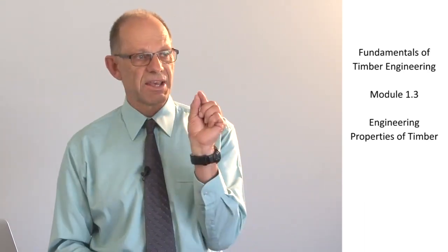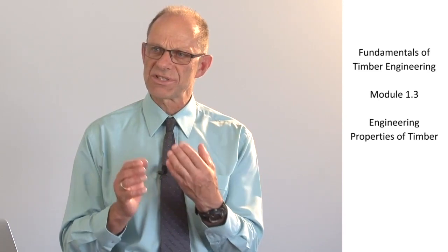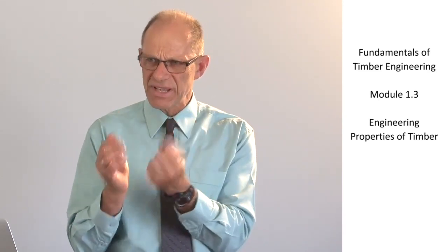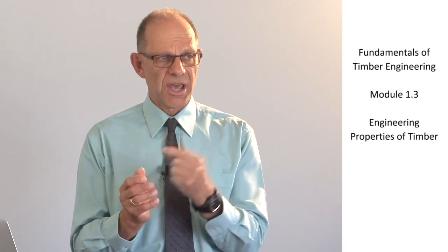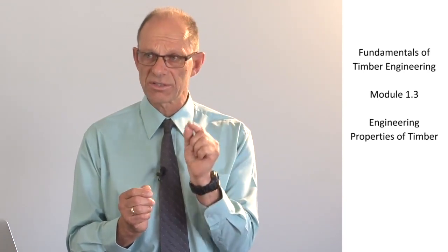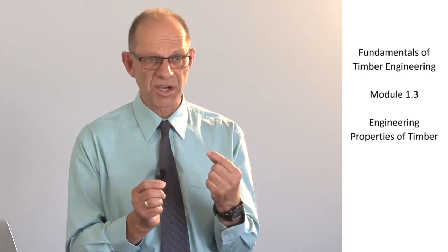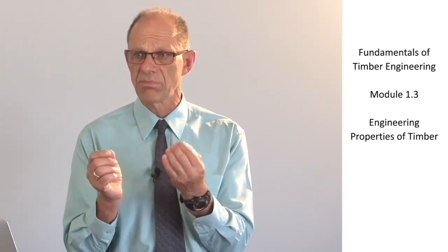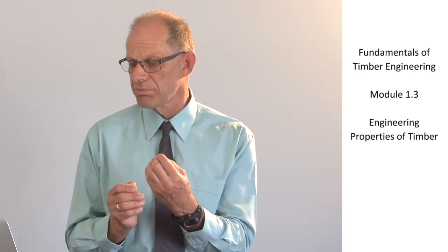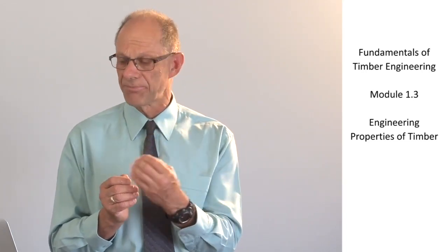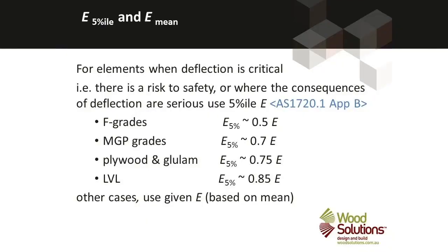On the other hand, there are cases where we're interested in how the most flexible piece of timber will actually perform — those cases where exceeding deflection limits could lead to a structural problem or some damage to the building. For those instances, we don't use the average modulus of elasticity; we use a fifth percentile value. AS1720.1 gives guidance on what the fifth percentile is for a number of different products.